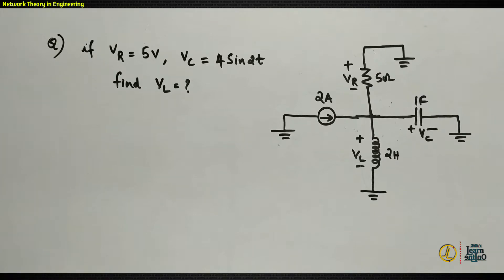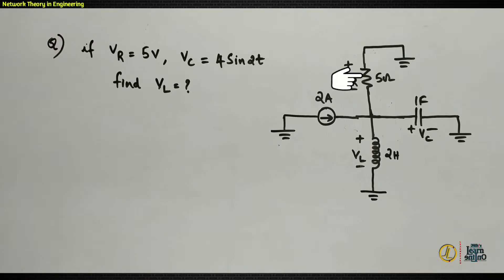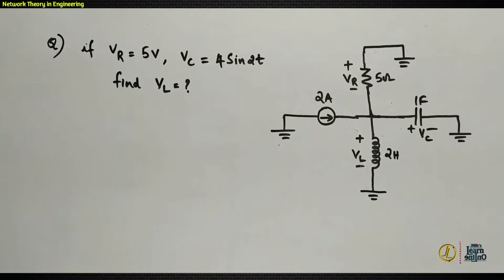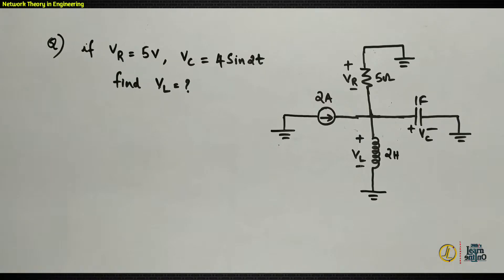Our first question has a circuit where VR equals 5 volts, VC equals 4 sine 2t, and we have to find the value of VL. VR is the voltage across the resistor, VC is the voltage across the capacitor, and VL is the voltage across the inductor. The polarities are also marked; VR and VC are given, and we need to find VL.